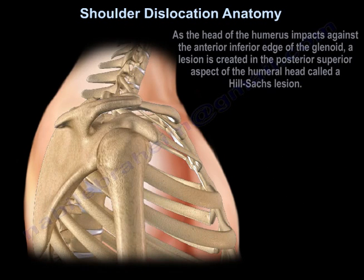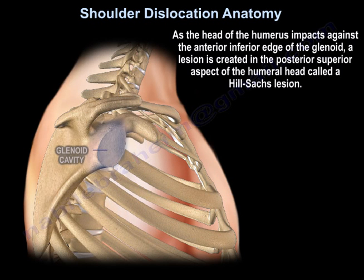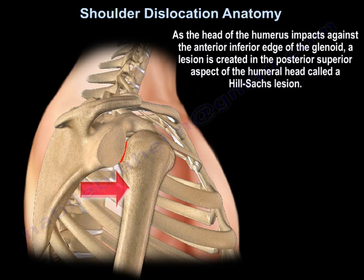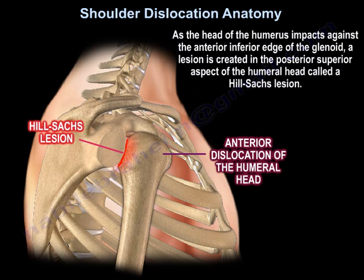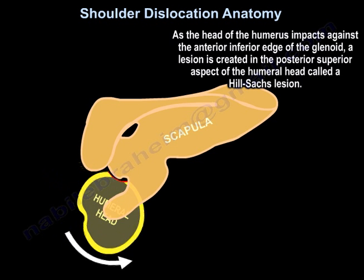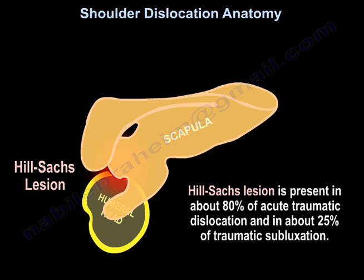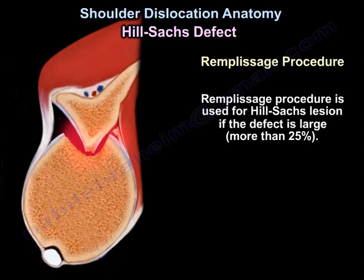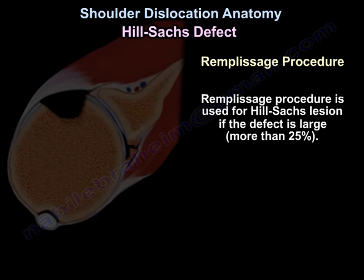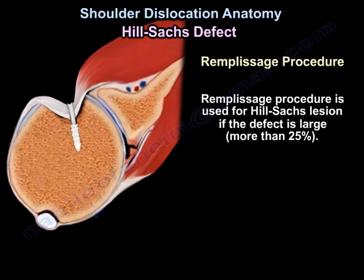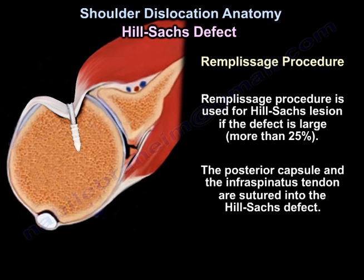As the head of the humerus impacts against the anterior inferior edge of the glenoid, a lesion is created in the posterior superior aspect of the humeral head called a Hill-Sachs lesion. It is present in about 80% of acute traumatic dislocation and about 25% of traumatic subluxation. The Remplissage procedure is used for Hill-Sachs lesion. If the defect is large — more than 25% — the posterior capsule and the infraspinatus tendon are sutured into the Hill-Sachs defect.